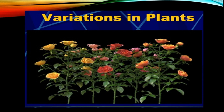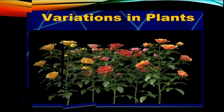Not only in humans and animals, but even in plants we can see many variations. Look at this — all of them belong to the same group of host plants, but the color of the flower is not the same. Here it is yellow, here it is red, and sometimes you can see rose color. So within the same group of plants, there are variations in flower color.